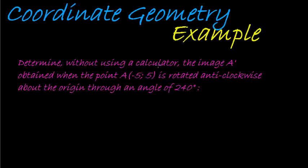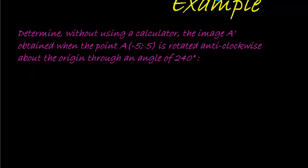Determine without using a calculator the image A' obtained when the point A(-5, 5) is rotated anti-clockwise about the origin through an angle of 240 degrees. Obviously, they tell us not to use a calculator, which means that we are going to work with special angles.